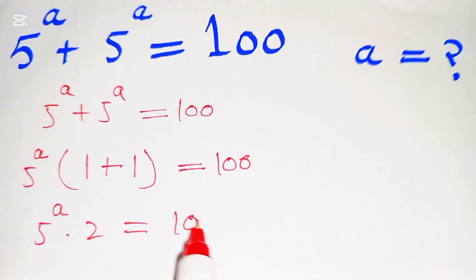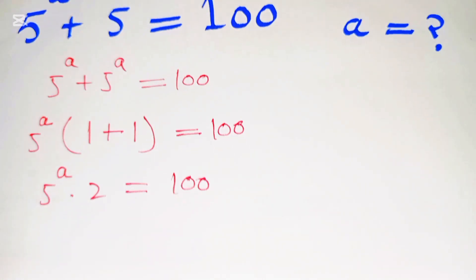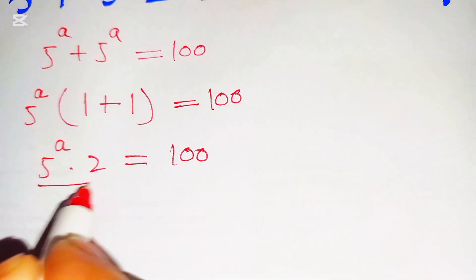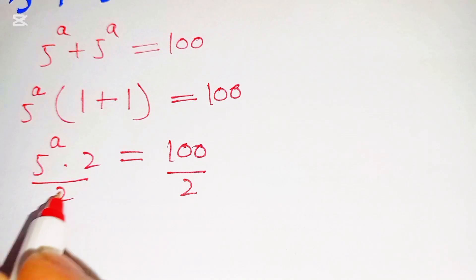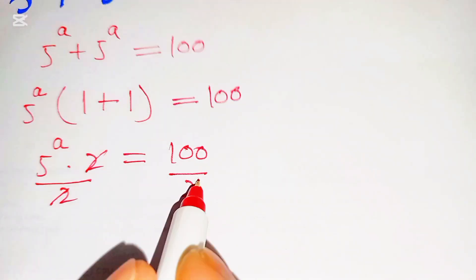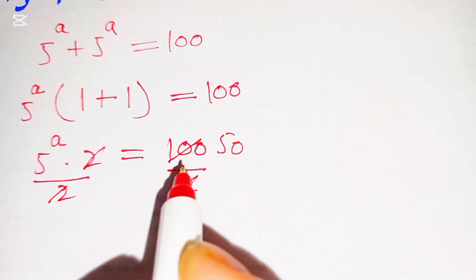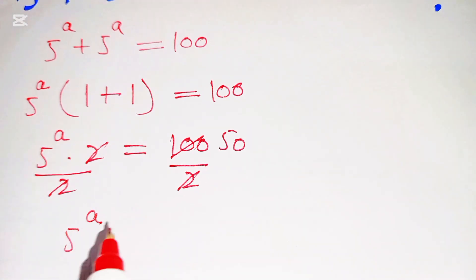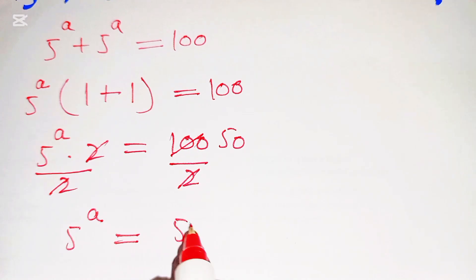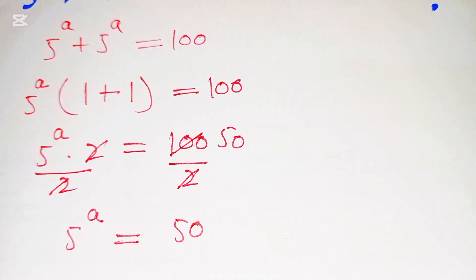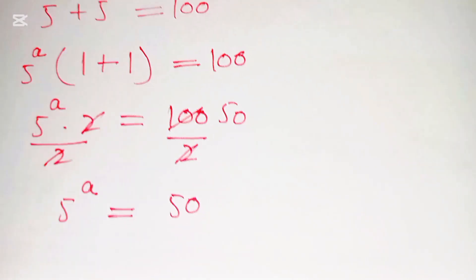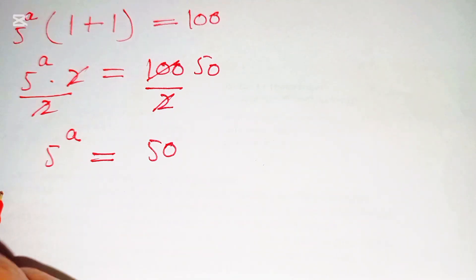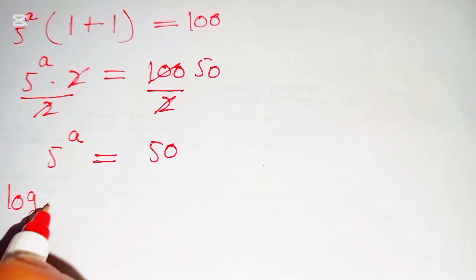So 5 power of a times 2 is equal to 100. Now we divide both sides by 2, and the 2s cancel out, giving us 5 power of a is equal to 50.